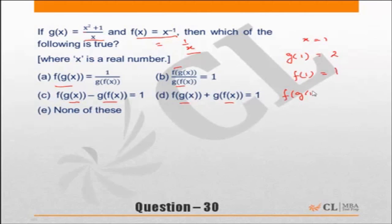f of g(1)—f of 2, there is nothing but f of 2, because g(1) is equal to 2. So f of 2 will be 1 by 2.